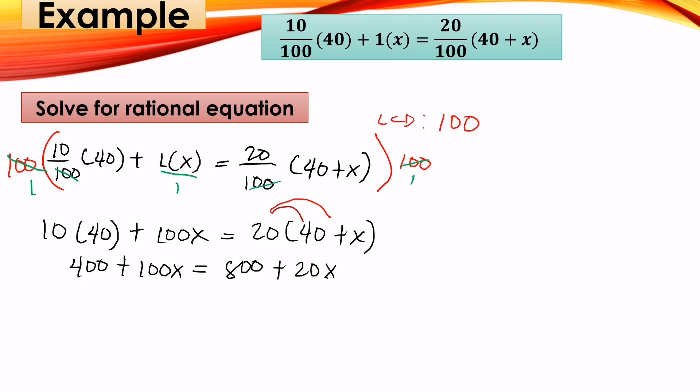100x from positive will become negative 20x equals 800. 400 from positive will become negative 400. Then 100 minus 20 is 80x equals 800 minus 400, which is 400.